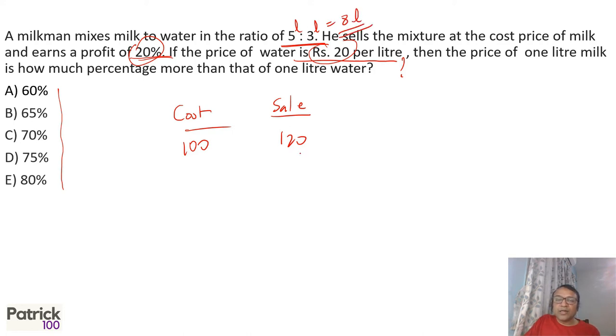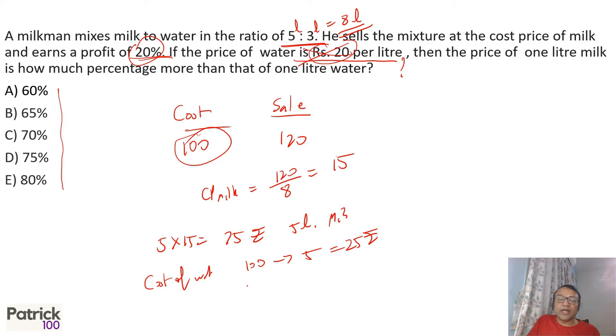He sells 8 liters for 120, which is the cost price of milk. So cost price of milk becomes 120 upon 8, 15 based on this. I'm ignoring this 20. If cost price of milk is 15, you mix 5 liters of milk, so 5 into 15 is 75 rupees, the total cost of milk for 5 liters. So the total cost is 100 rupees. So cost of water is 100 minus 75, which is 25 rupees, the cost of water. This 25 rupees is for 3 liters because we mix 3 liters of water. So per liter, the cost of water will be 25 upon 3 per liter for water.